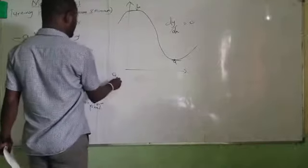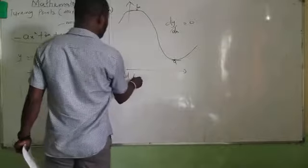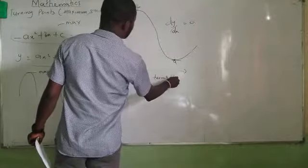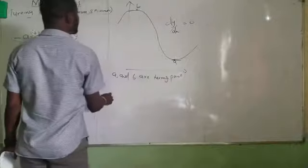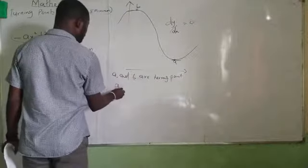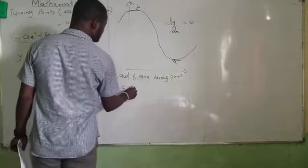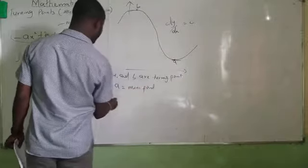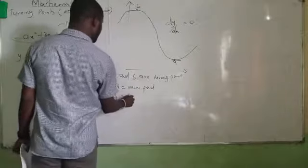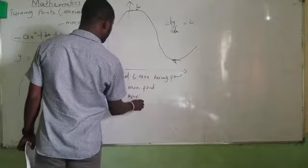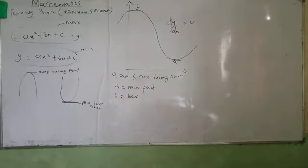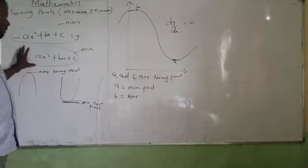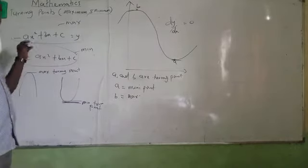A and B are turning points. A is a minimum point, and B is a maximum point. Any time you have a curve like this it is a maximum, and a curve like this is a minimum.